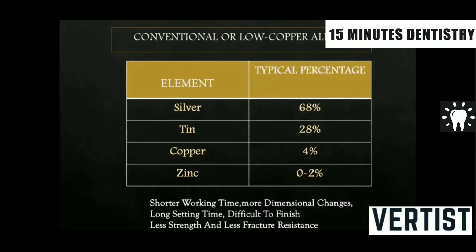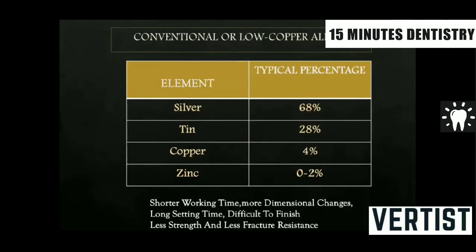Coming to the composition — composition is a very important aspect of any alloy powder. When we talk about a conventional low copper amalgam alloy, this composition was given by Dr. G.V. Black almost 100 years ago and is still followed. Here the silver content is highest at around 68%, and zinc is added at around 2%. The problem with this type of alloy was that the working time was short, there were many dimensional changes, strength was less, and it had very high creep.